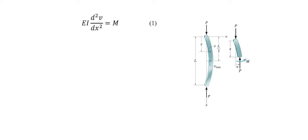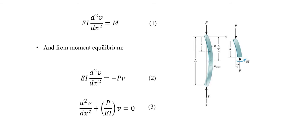EI times d²v over dx² equals M. And for moment equilibrium we can write: EI times d²v over dx² equals negative PV. We can rewrite this equation as: d²v over dx² plus P over EI times V equals 0.